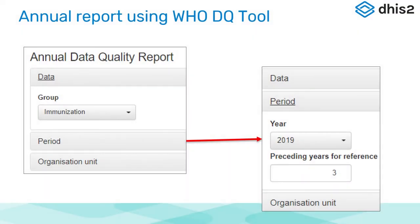On the toolbar for the WHODQ tool, there's something that says annual report. You click that open and the first option you have is data. You can select the group — it could be core, it could be immunization, it could be maternal health. For the period, you then select the year that you want to run the annual report for and how many years before that you want as reference so that there is some background.